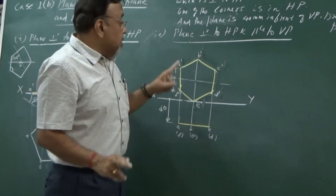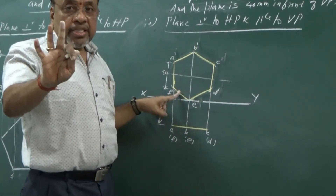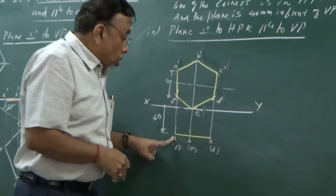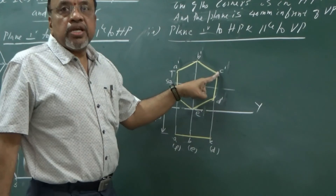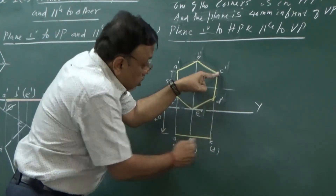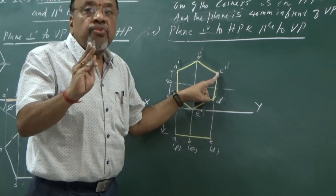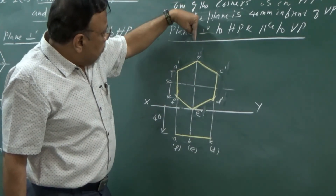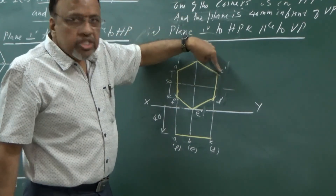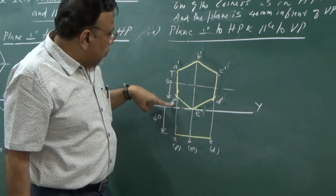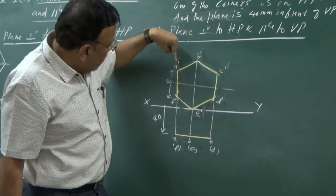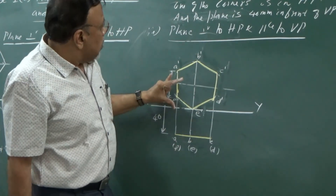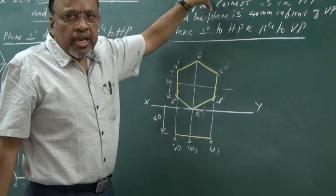The advantage of naming corners in a particular fashion is that without looking at the front view, I can immediately do the top view naming without errors: A, B, C, D, E, F. Looking from the top, I can see only A, B, C - while D, E, F are exactly behind C, B, and A respectively, so they are shown in brackets. This is the final projection for this case.